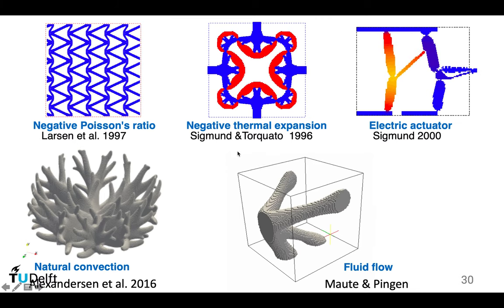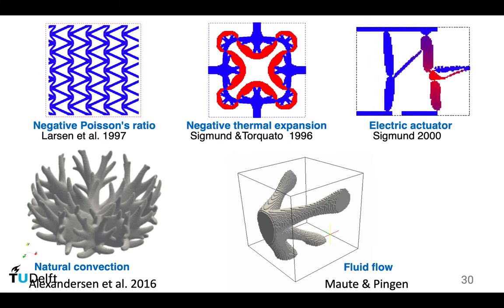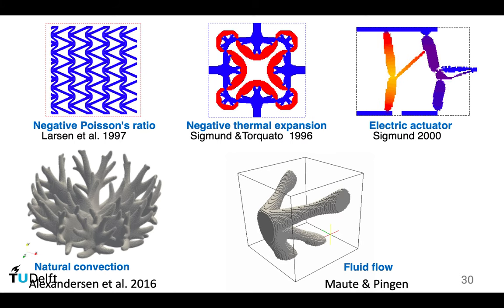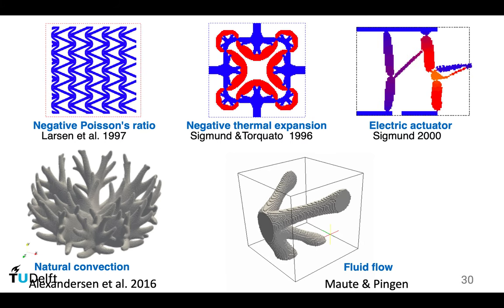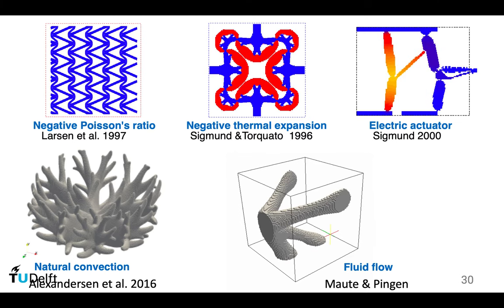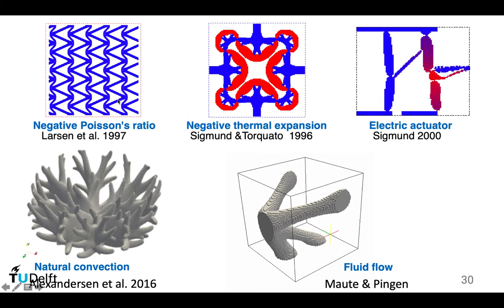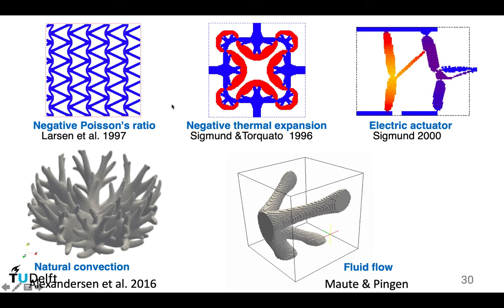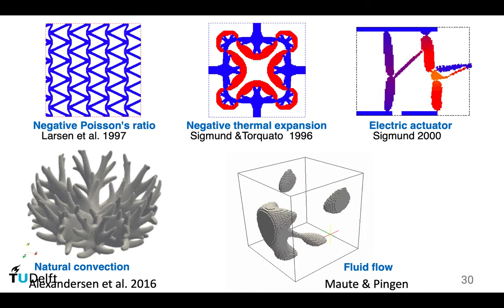Until now, the examples — the chair, the airplane wing, the bunny, and the kitten — have been optimized for stiffness. But topology optimization also applies to other physical phenomena and different mechanical performance measures. I selected five examples to explain that it is a very versatile process applicable to many different physical phenomena.